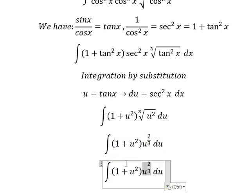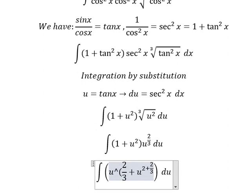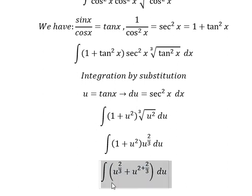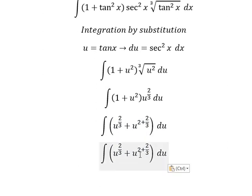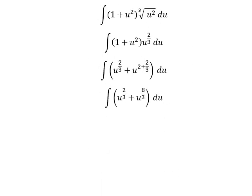So this one multiply by 1 plus u square. So 2 plus 2 over 3, you got about 8 over 3. And now we have the final answer.